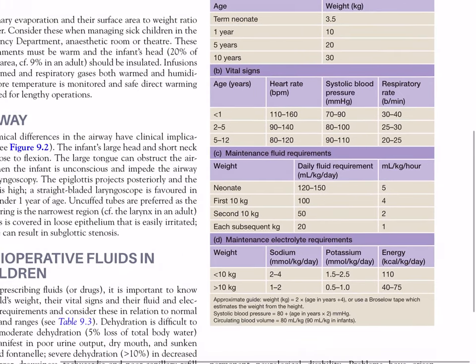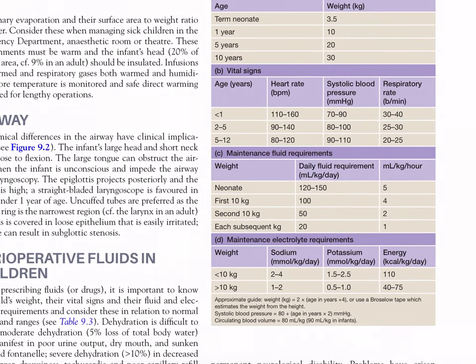Vital signs by age group: less than 1 year — heart rate 110–160 beats per minute, systolic blood pressure 70–90 mmHg, respiratory rate 30–40 per minute. 2 to 5 years — heart rate 90–140, systolic blood pressure 80–100 mmHg, respiratory rate 25–30 per minute. 5 to 12 years — heart rate 80–120, systolic pressure 90–110 mmHg, respiratory rate 20–25 per minute. So heart rate and respiratory rate decrease with age while systolic pressure increases.